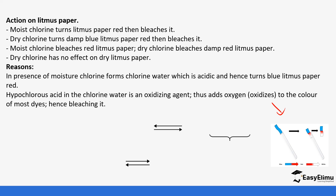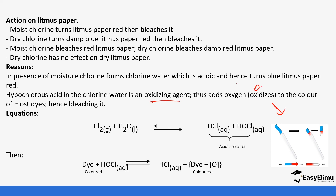Chlorine water is a mixture of hydrochloric acid and hypochlorous acid. The hypochlorous acid in the chlorine water is an oxidizing agent, so it oxidizes the color of most dyes — that is, it bleaches them. Step by step: chlorine reacts with water to form hydrochloric acid and hypochlorous acid, then the hypochlorous acid gives up nascent oxygen, which reacts with the dye to form hydrochloric acid and a colorless material.